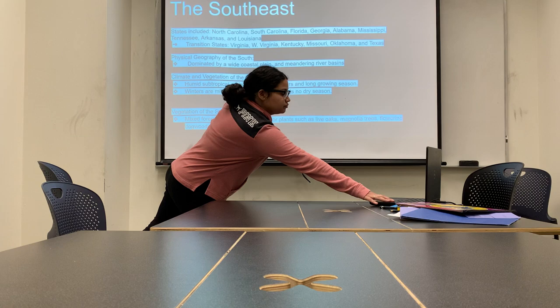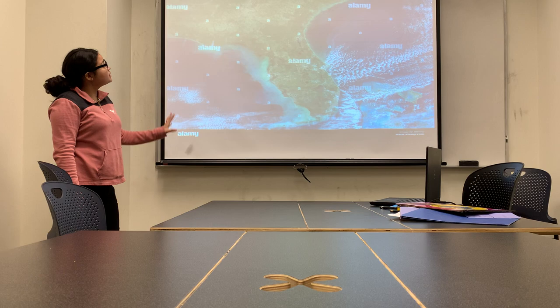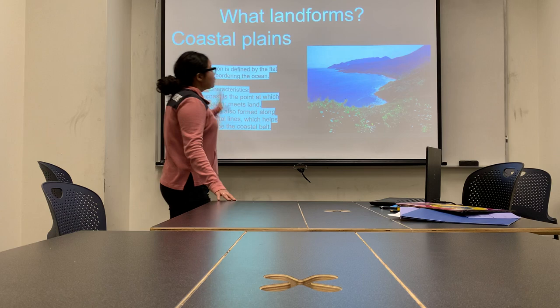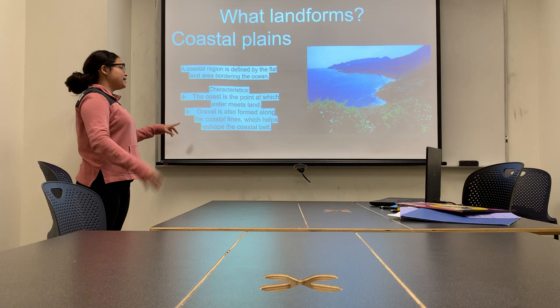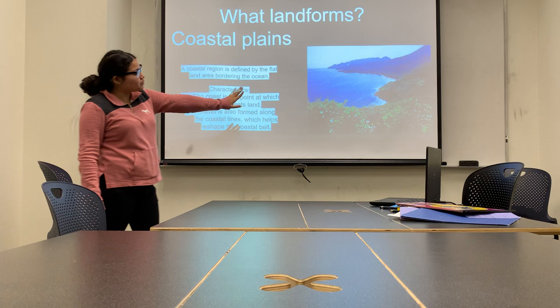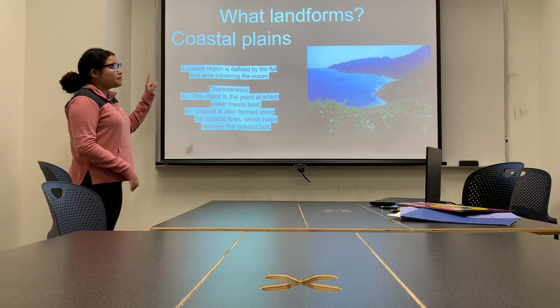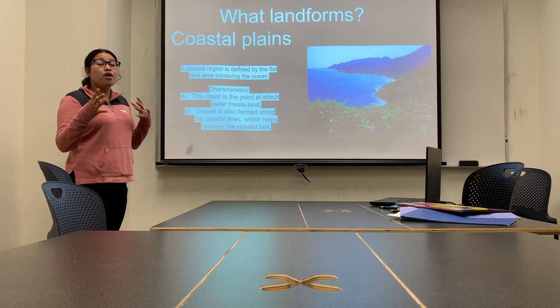This is a picture — you see this is Florida. You see a lot of ocean water and a lot of coastal plains. A coastal plain is defined as the flat land area bordering the ocean. It basically means the coastal plain is the point at which water meets land. We can see in the picture the water and the land, and that little section in between — that is a coastal plain. It can be found in both the Southwest and Southeast regions.